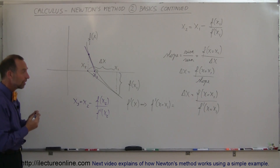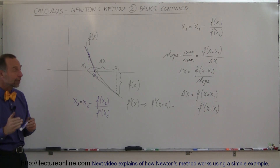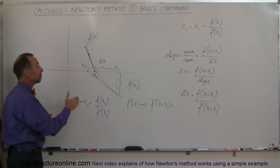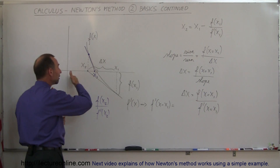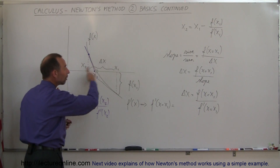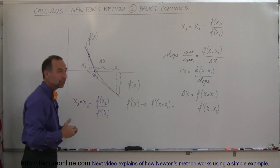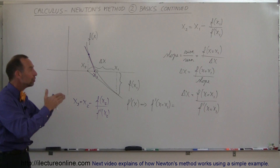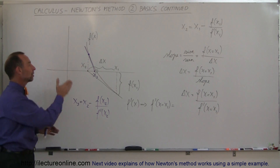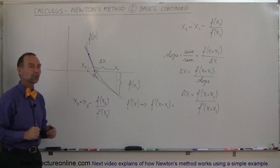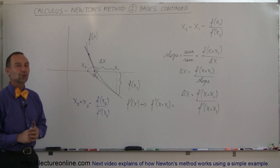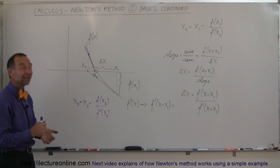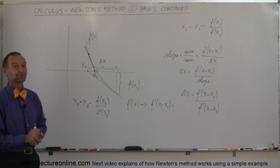So you can see that it doesn't matter if you pick a point at random to the left or right of your function — you will always zero in using Newton's method on the root that's nearest to your point, and that's how that works.